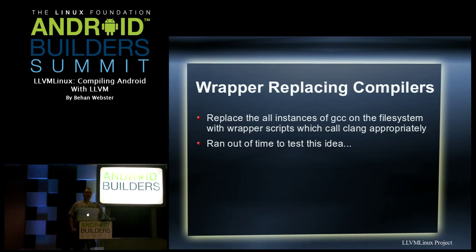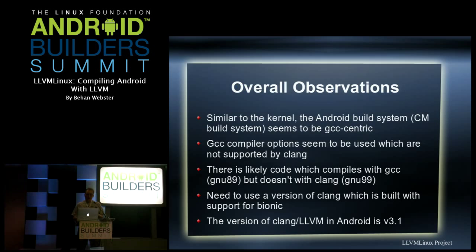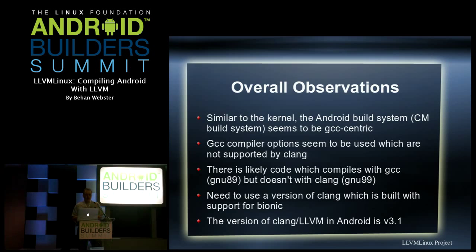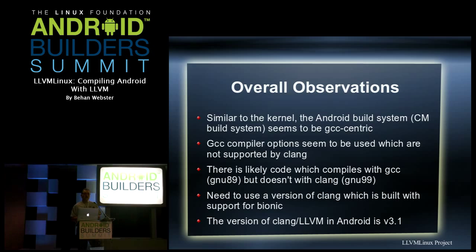That approach of replacing GCC with wrapper scripts is probably how I'll proceed now to get things working — it's a matter of getting the code actually patched to work with LLVM before going further. These are the overall observations I made based on the experience of building the Linux kernel and Android: the build system for Android is relatively GCC-centric. That's not bad — it's just the way it was built — but it means that a new compiler invoked differently can cause a lot of problems. There are also compiler options that don't translate across to another compiler.